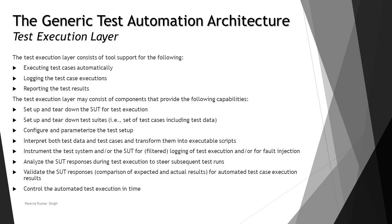The test execution layer may provide the following capabilities: set up and tear down the SUT or test execution; set up and tear down test suites; configure and parameterize test steps or setup; interpret both test data and test cases and transform them into executable scripts; instrument the test system and SUT for logging of test execution or for fault injection — that is, fault seeding; analyze the SUT responses during test execution to steer subsequent test runs; validate the SUT responses for automated test case execution results with respect to checkpoints; and control the automated test execution in time, determining pacing and other execution control activities.